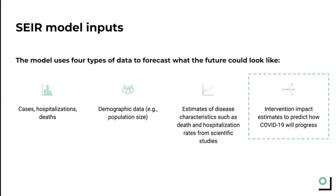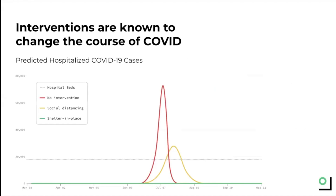This last input is especially interesting and relevant because of all the different inputs, interventions in our behaviors and our actions are the only thing we have control over. We can't change how many cases there are today or the population size, but what we can influence is the actions that we take. The good news is that we found over time that interventions like sheltering in place or social distancing do make a big difference compared to not making any changes in our lifestyle at all.